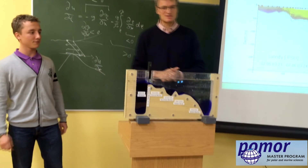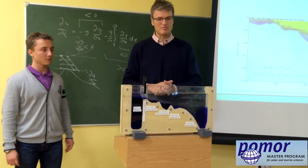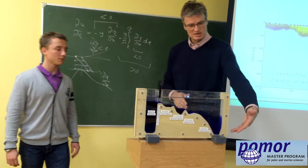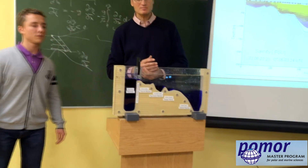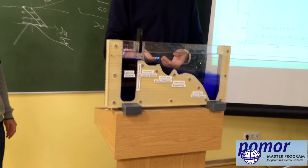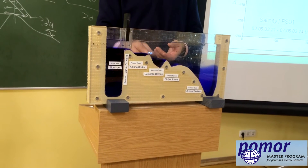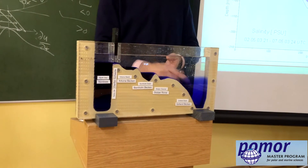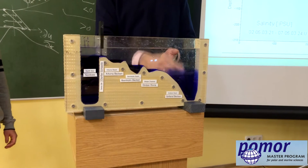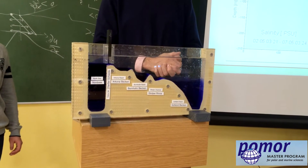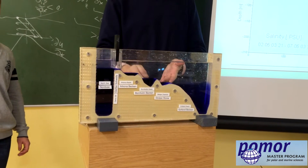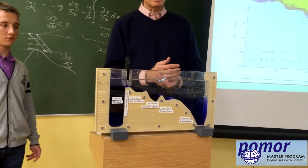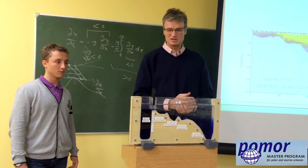What you see here in a few seconds takes in reality something like a couple of months. You can see that the central Baltic Sea is now filled with saline water. You can also see that some of the saline water is staying in the basins — that would be the Bornholm Basin, Stolpe Channel, and Eastern Gotland Basin — and the salinity arriving in the central Gotland Basin is much lower than the salinity of the inflowing water.